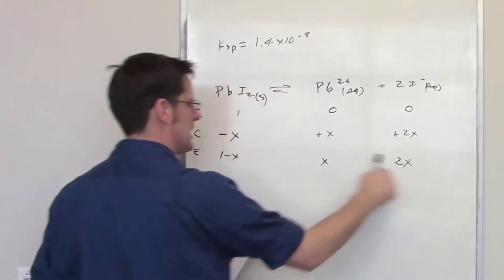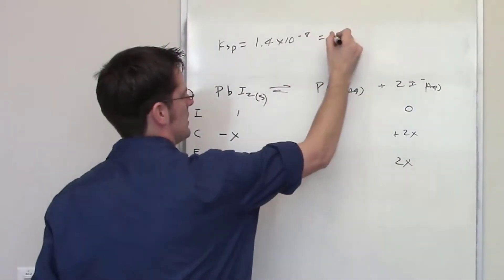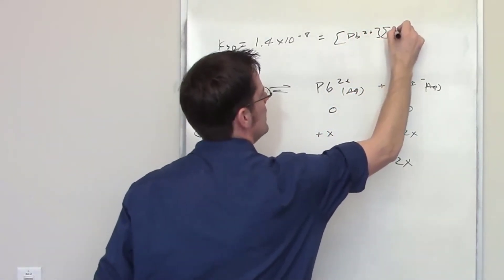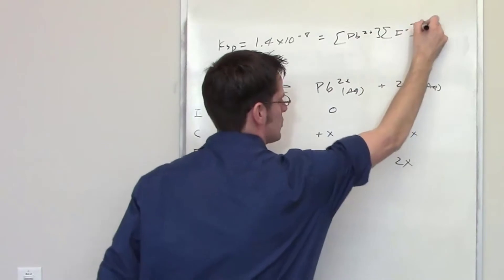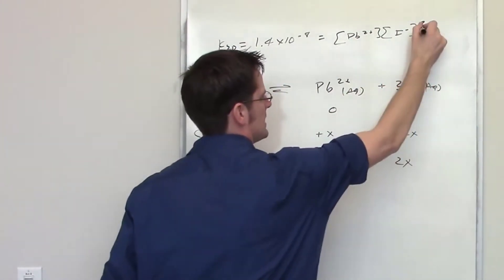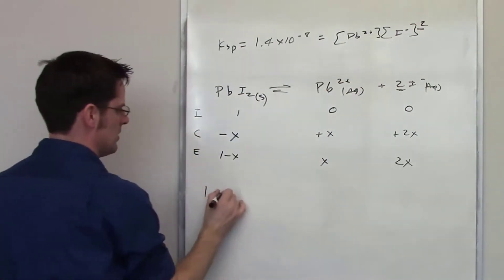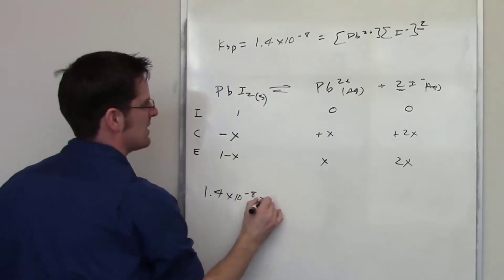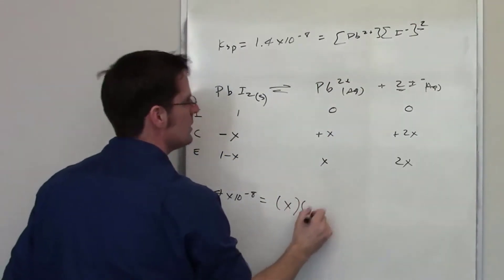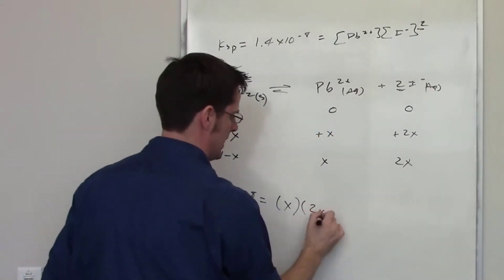These are the individual equilibrium concentrations for each species. The Ksp equilibrium constant is equal to the concentration of Pb²⁺ multiplied by the concentration of I⁻ squared, because there is a coefficient of 2 in front of iodine. I now take these equilibrium values and substitute them in: 1.4 times 10 to the negative 8 equals x times (2x) squared.